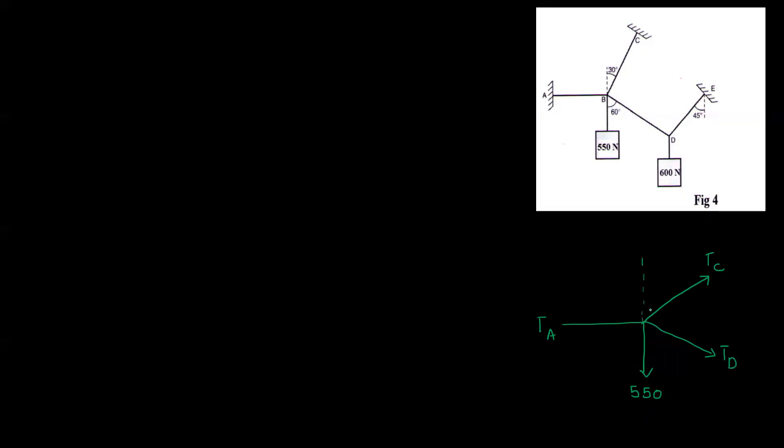Now we have components, with 30 degrees. If we have forces here, let's start with two components. What is TC? TC sin 30. TC cos 30. This angle is 60 degrees. TAD cos 60 — let's write that down.